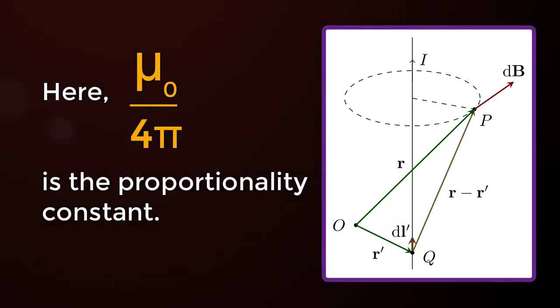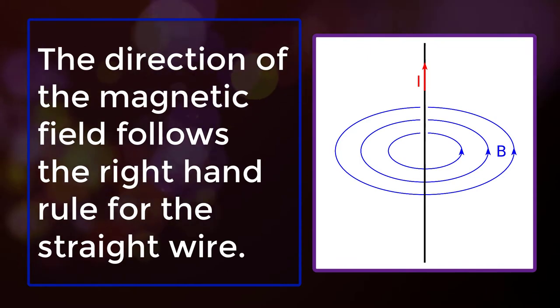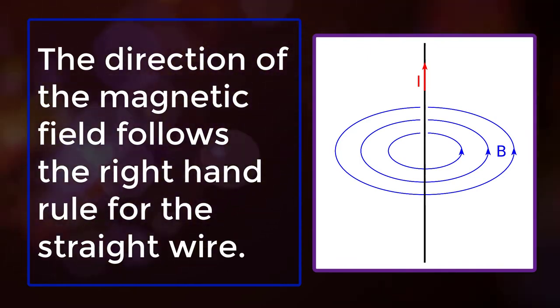Here µ0 by 4π is the proportionality constant. The direction of the magnetic field follows the right hand rule for the straight wire.